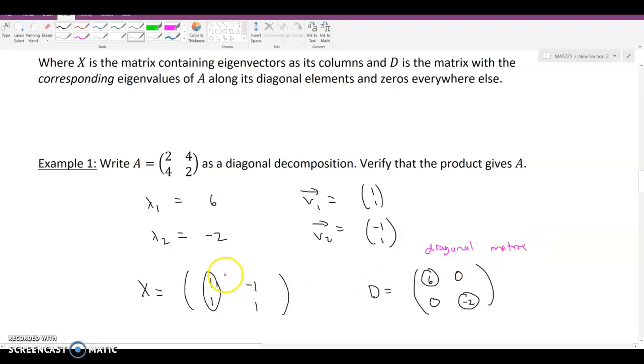The reason we need linearly independent columns is because this has to have an inverse. And we're going to compute that in the next video. So see you there.